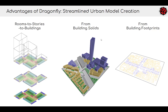In this video we're going to start to focus on the other two methods for assembling Dragonfly models. In particular we're going to really dive into the from building solids workflow for generating Dragonfly buildings from closed massing solids. This is probably one of the most popular ways of creating urban scale models, typically because during master planning phases these massings tend to be readily available.